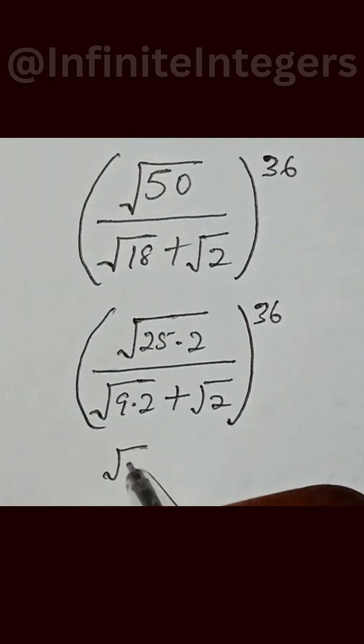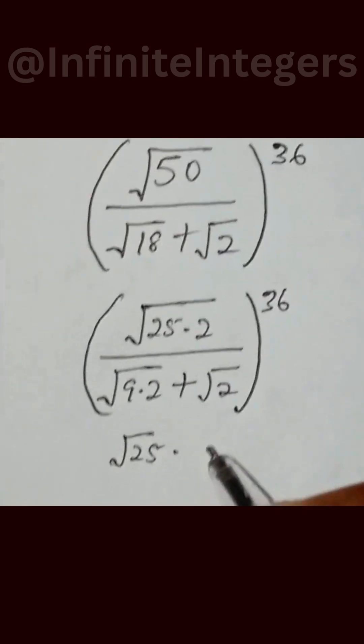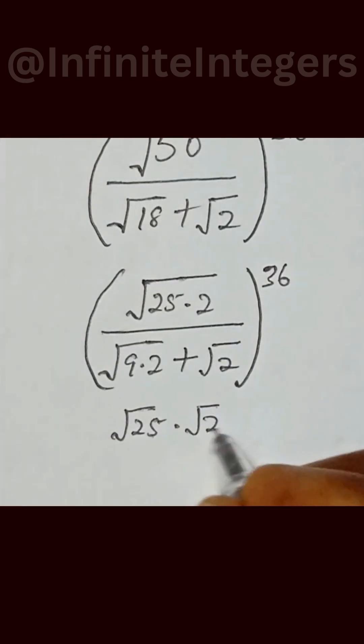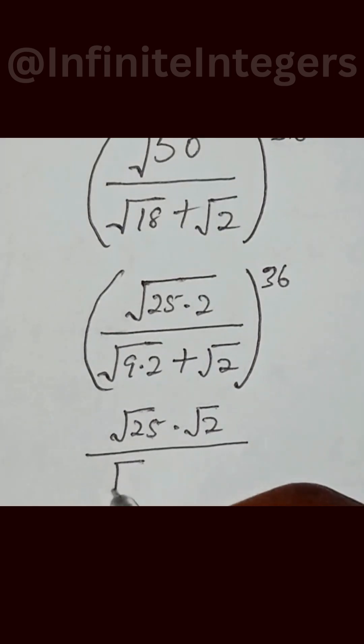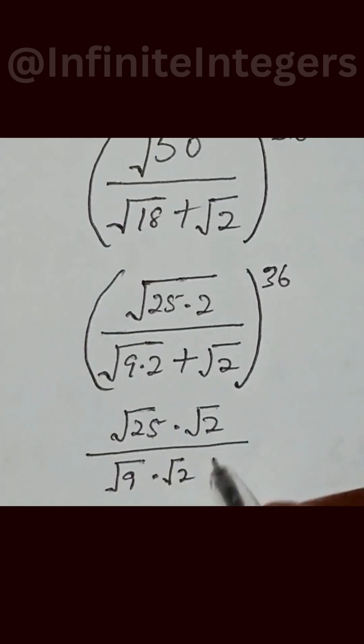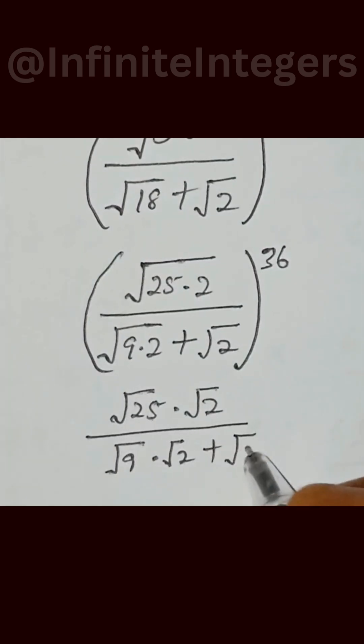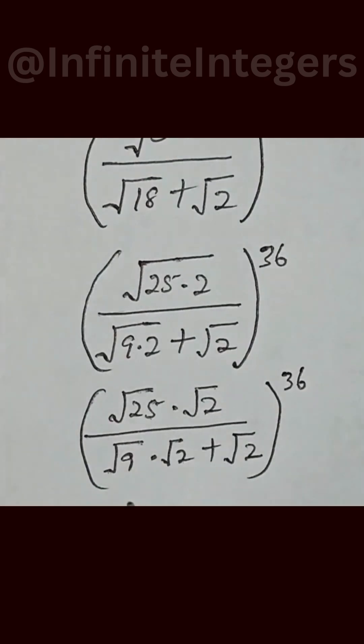We can split this as square root of 25 multiplied by square root of 2 over square root of 9 multiplied by square root of 2 plus square root of 2 into bracket to the power of 36.